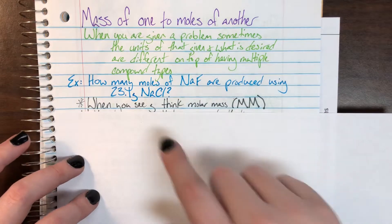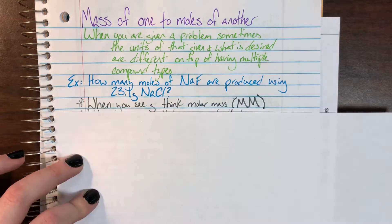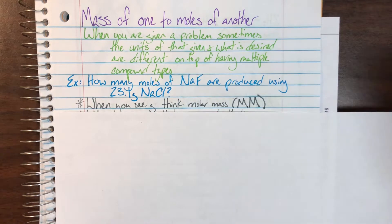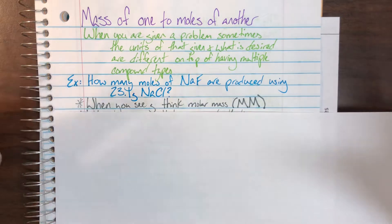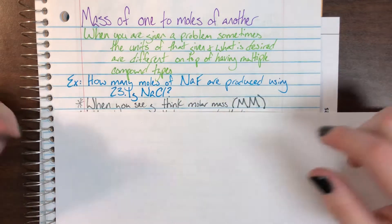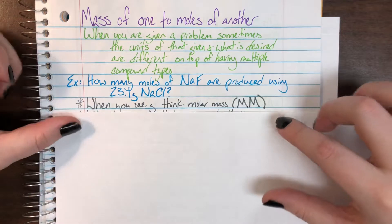Every time that you see grams anywhere in a problem, you need to think molar mass. As soon as you see grams, you know you have to get out of grams. We can't relate compounds directly gram to gram. We have to go through a ratio of mole to mole, which means we need to get out of grams, and we need that molar mass to do that.